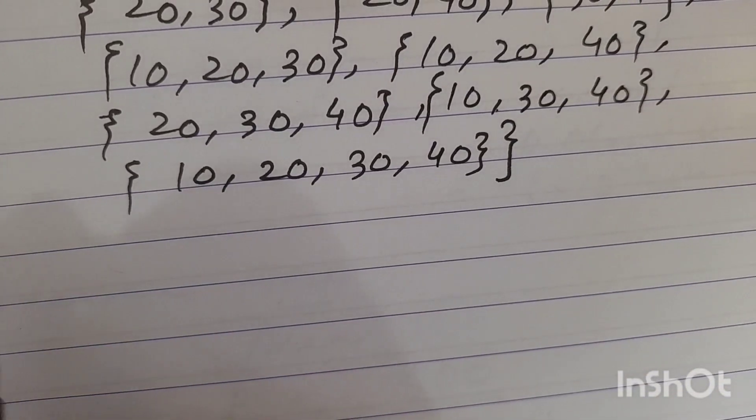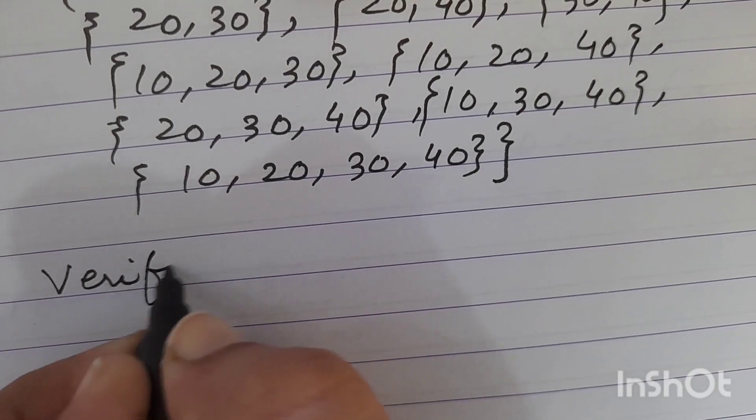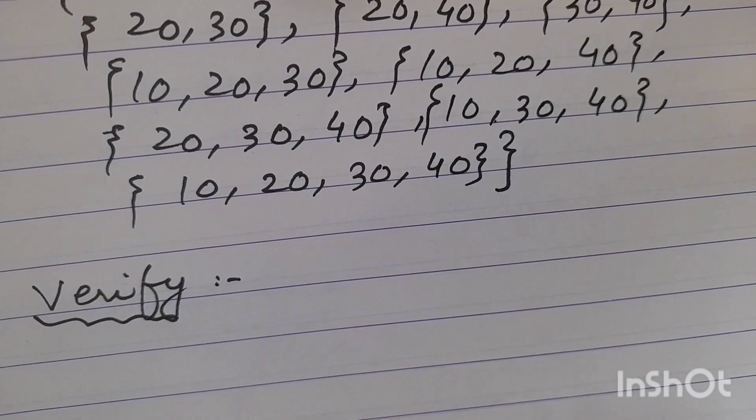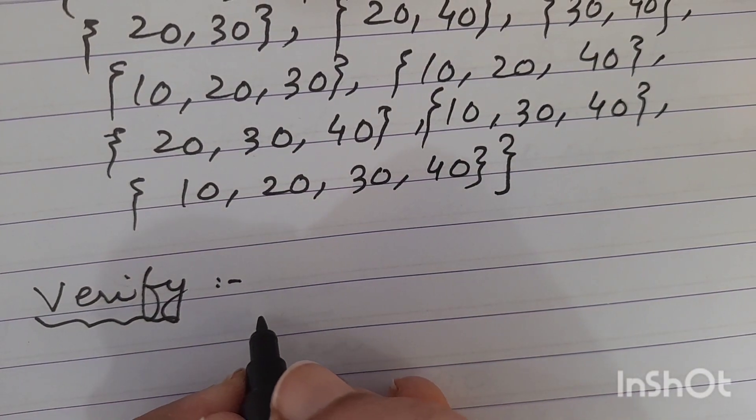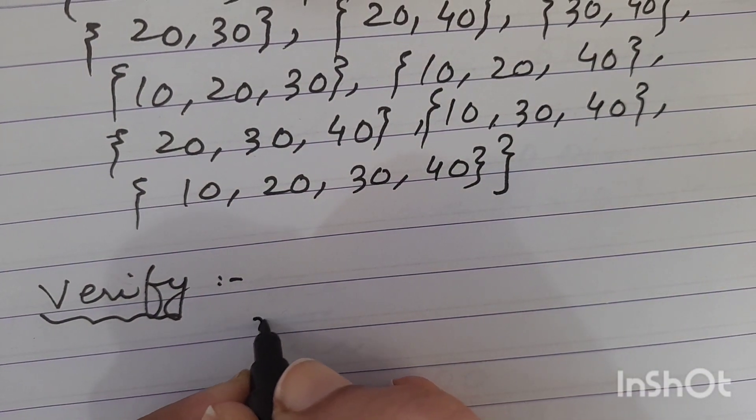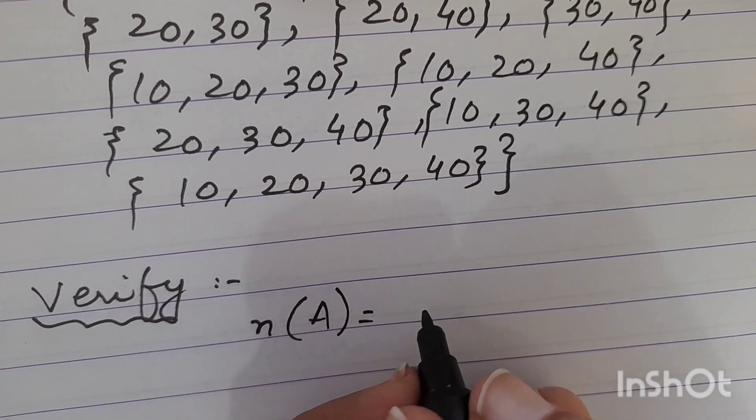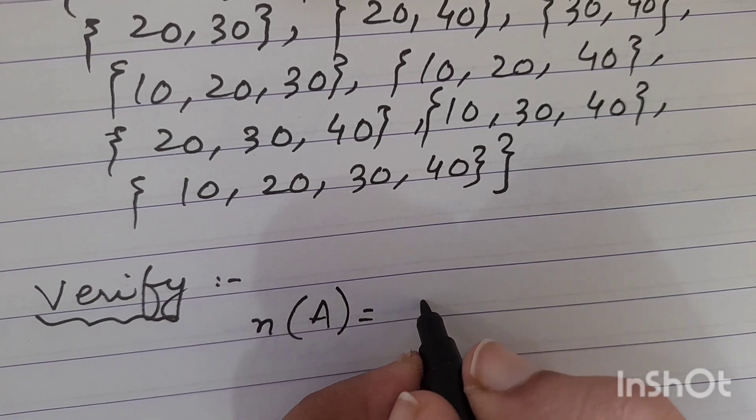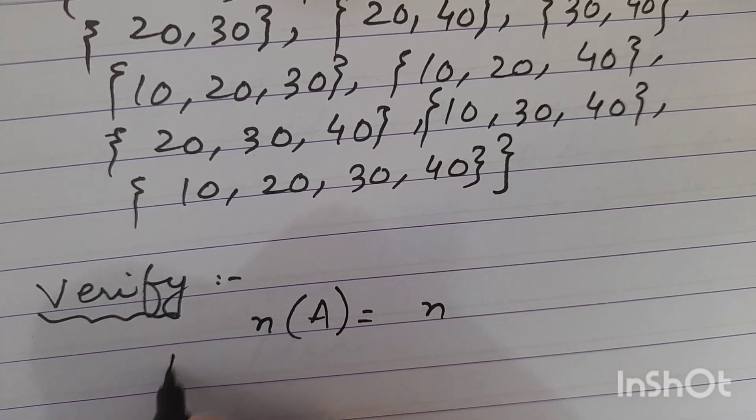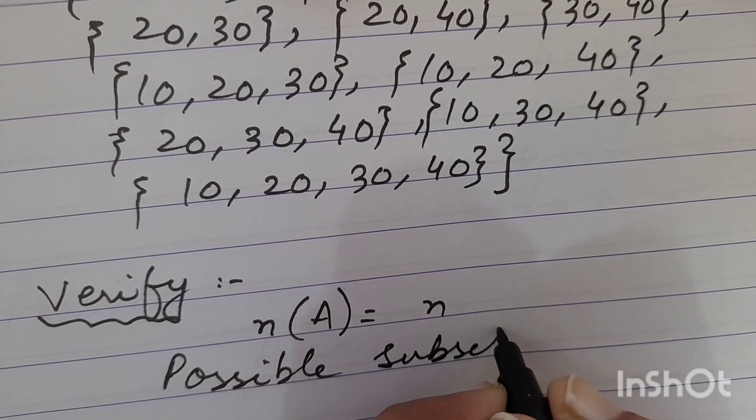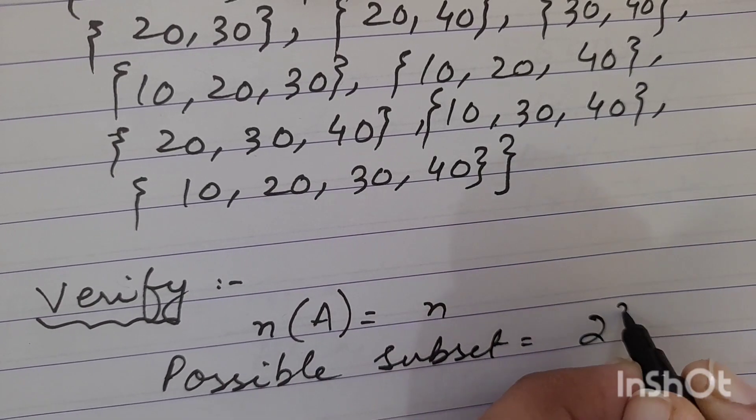Now we will verify it. We know that when the number of elements of any set is n, so the possible subsets is equal to 2 to the power n.